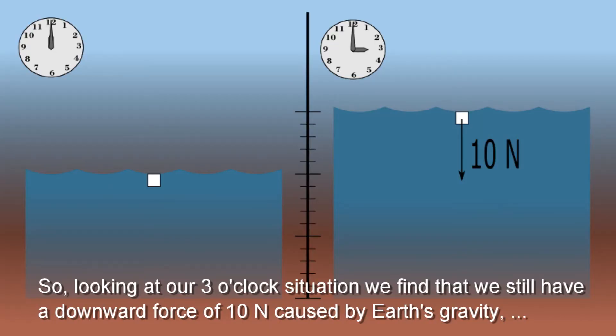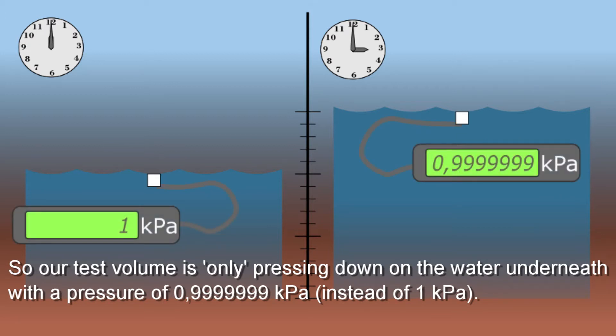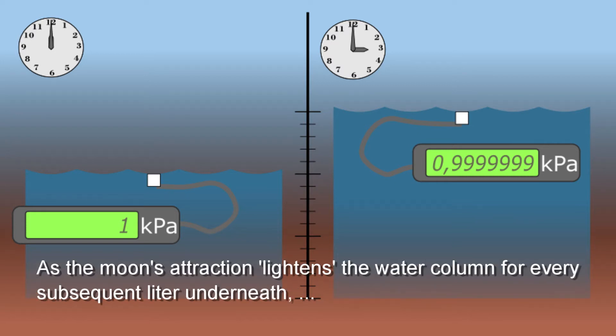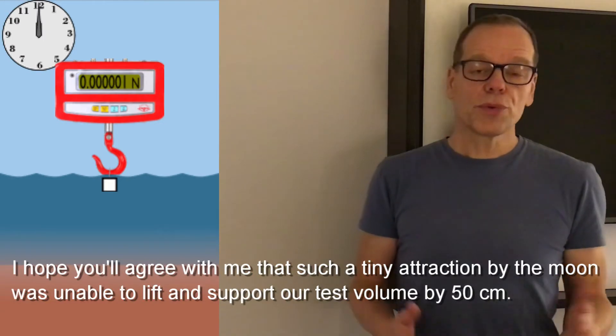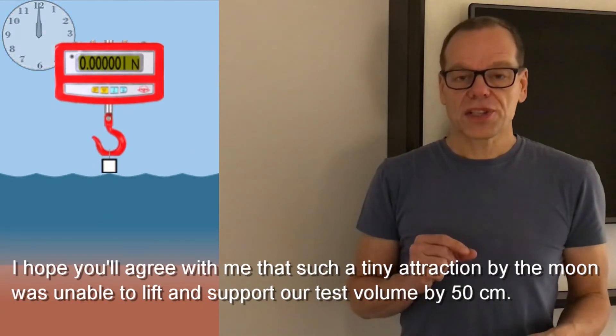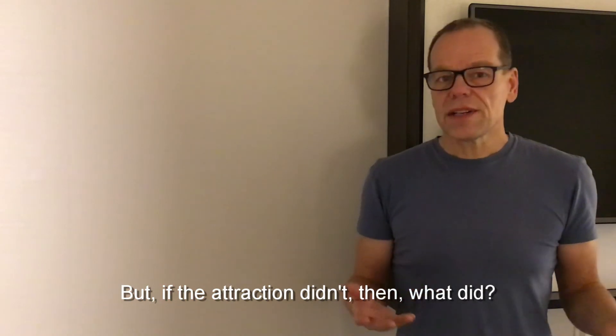So looking at our three o'clock situation, we find that we still have a downward force of 10 newtons caused by the earth's gravity. But we now also have an upward force of one millionth of a newton due to the position of the moon overhead. So our test volume is only pressing down on the water underneath with a pressure of 0.99999999 kilopascals. As the moon's attraction lightens the water column for every subsequent liter underneath, the water pressure on the sandy bottom will only be 14.99999985 kilopascals. I hope you will agree with me that such a tiny attraction by the moon was unable to lift and support our test volume of water by 50 centimeters. But if the attraction didn't, then what did?